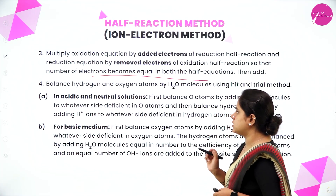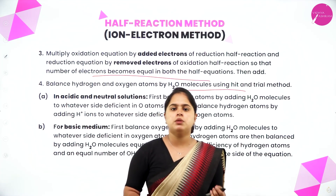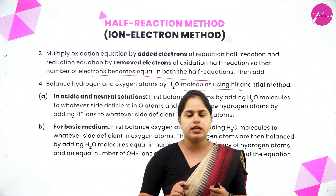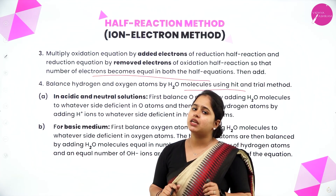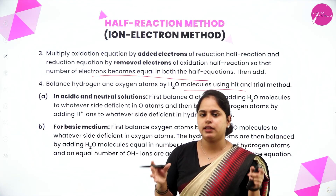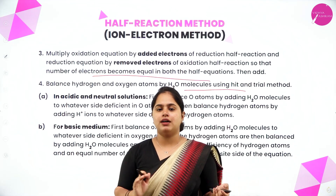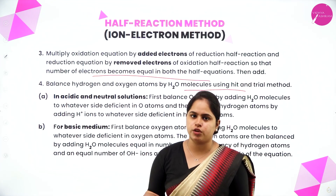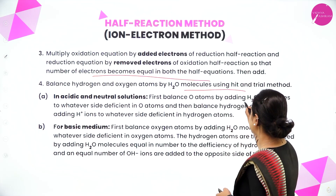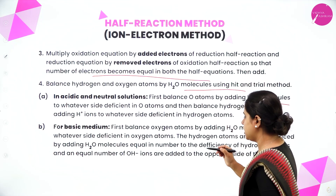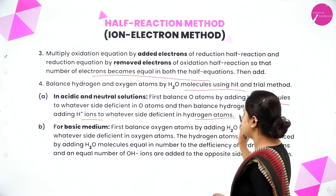The next step is to balance hydrogen and oxygen atoms using water molecules — this we also did in the oxidation number method. Now there are two criteria: acidic medium or basic medium. In acidic medium, on whichever side there is a deficiency of oxygen atoms, we add the suitable number of water molecules. On the other side, the appropriate number of H⁺ ions are added. First balance oxygen atoms by adding water molecules, then balance hydrogen atoms by adding H⁺ ions to whichever side is deficient.